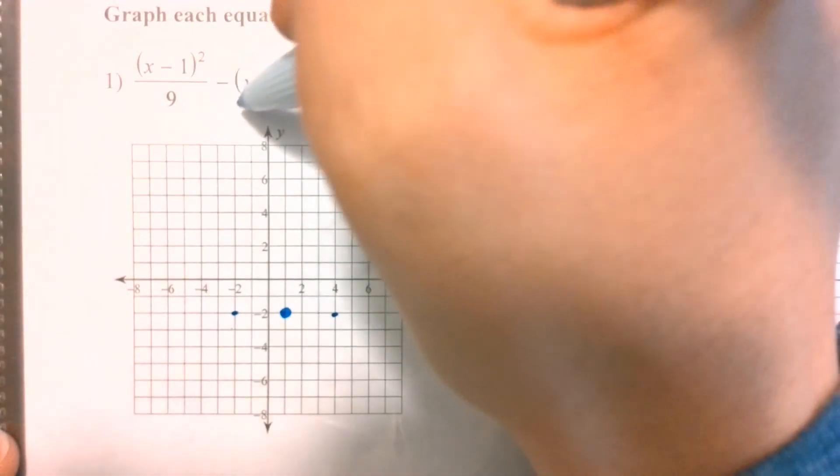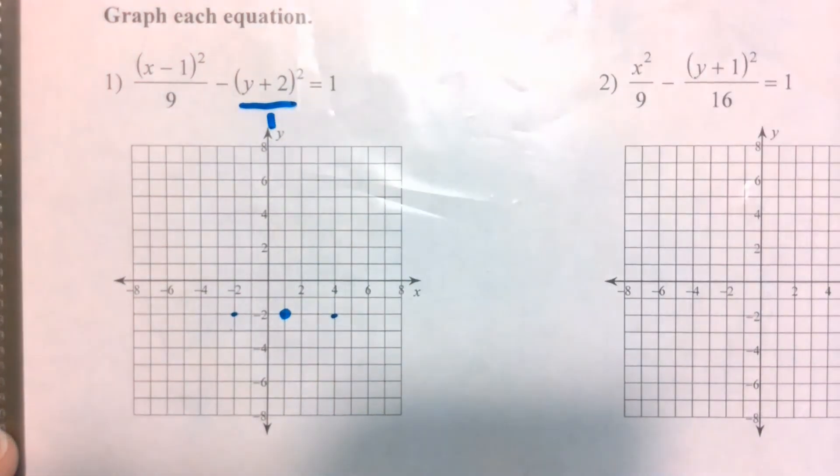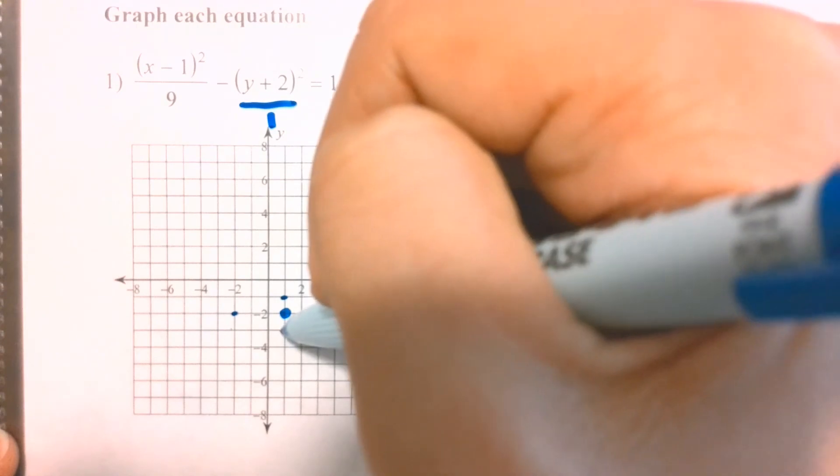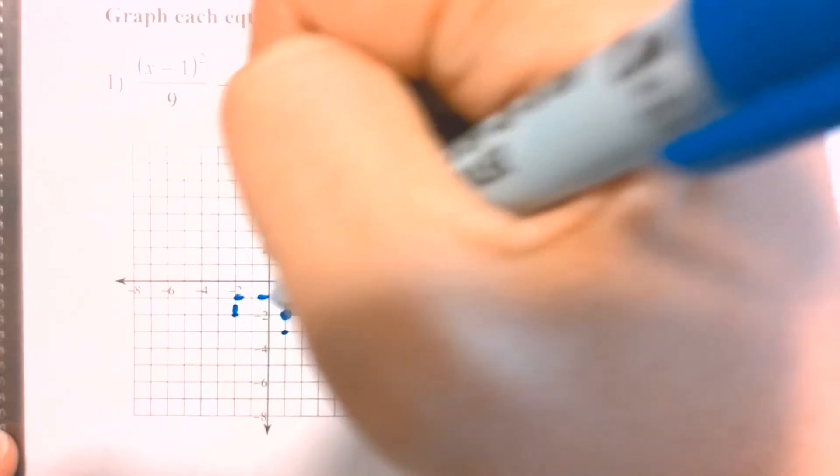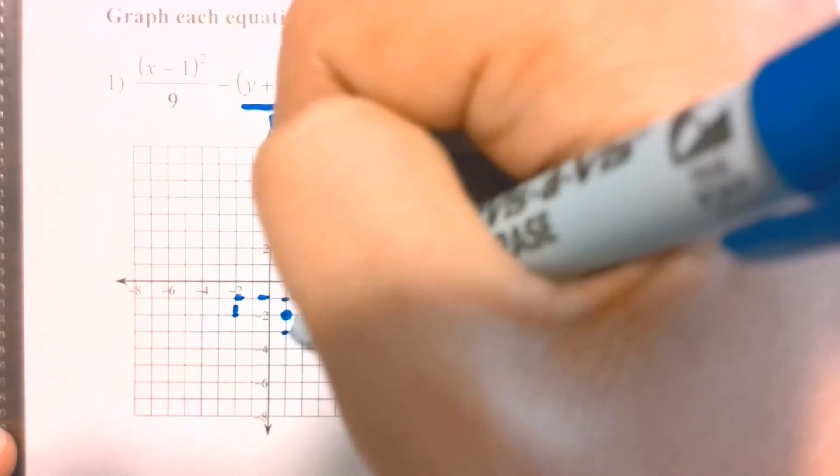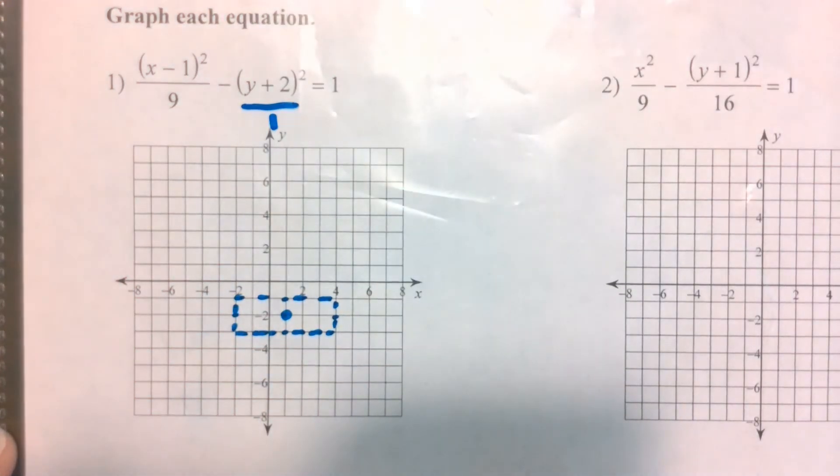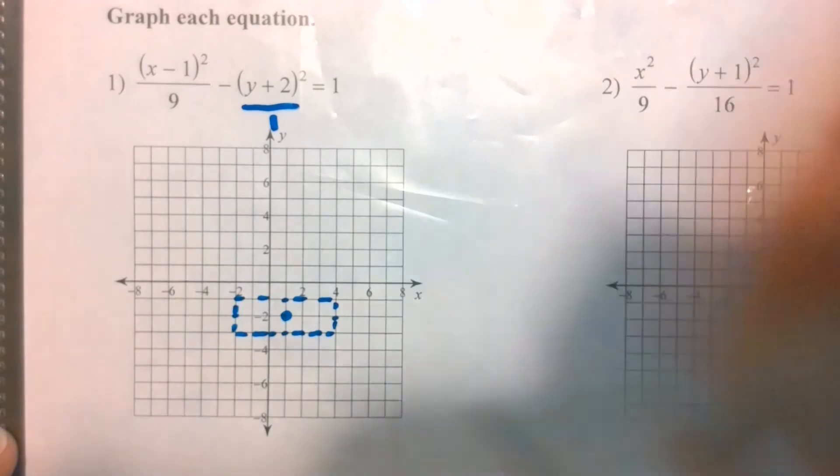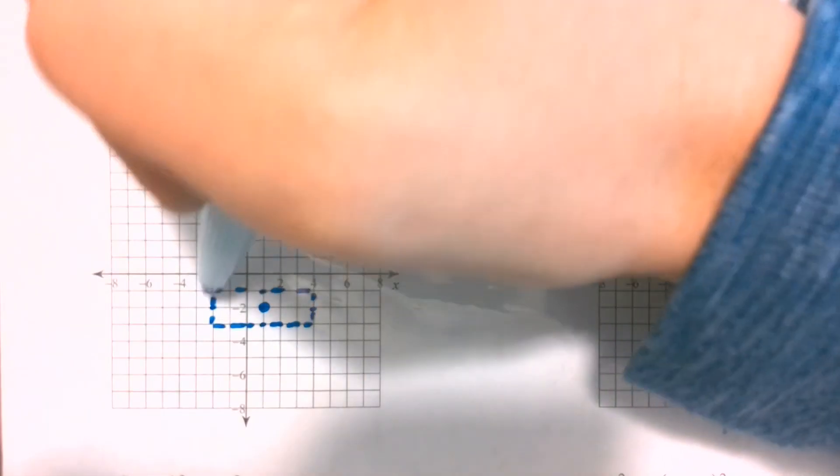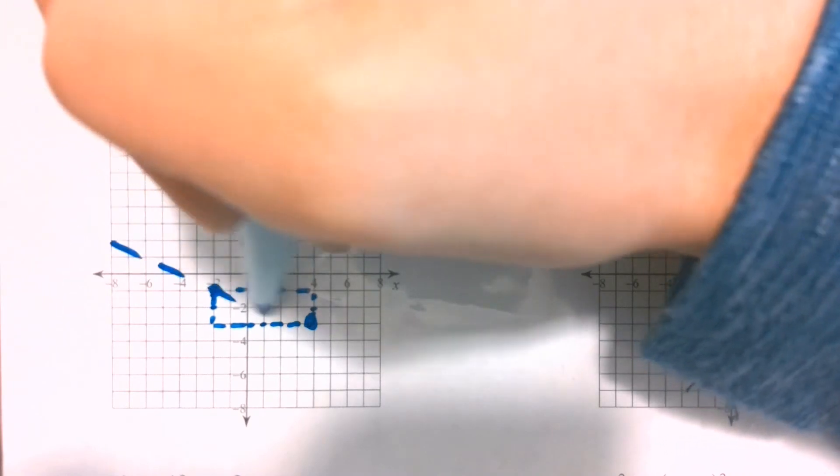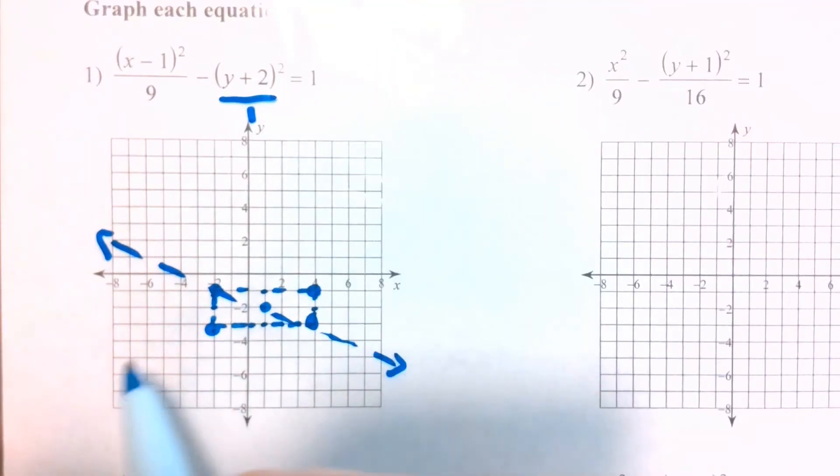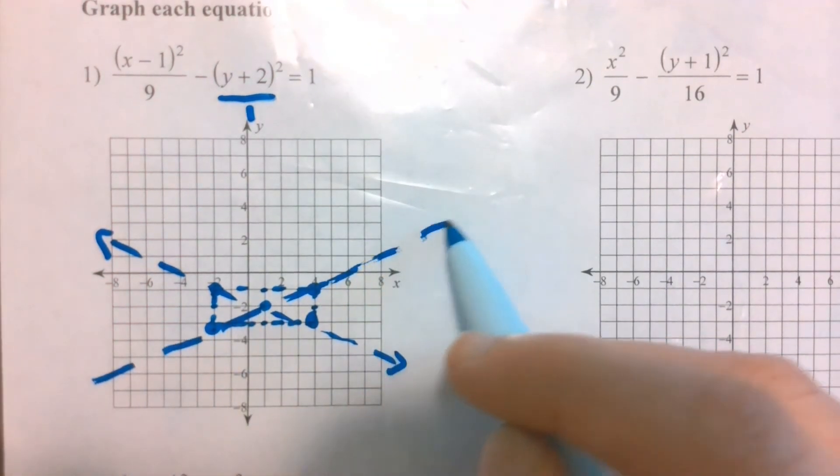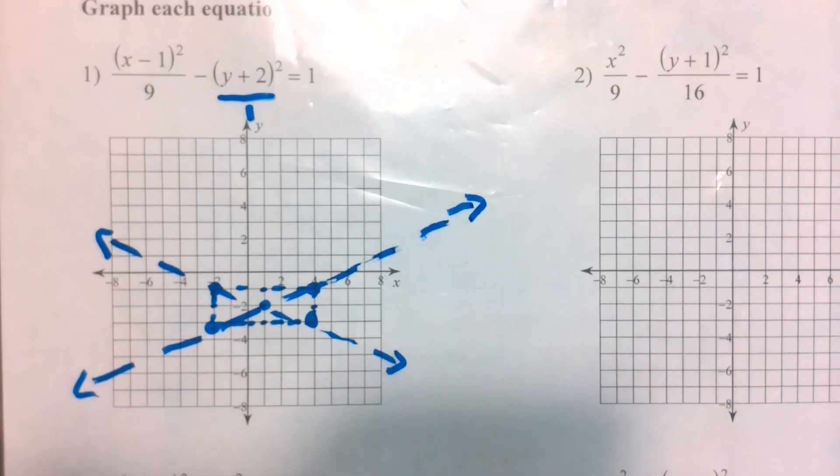There isn't anything underneath the y, so you could even think of this as being a 1 underneath the y. Taking the square root, that would tell us we're going to go up 1 and down 1. Remember that these points are just for us to be able to draw in that rectangle. I would definitely make it dashed because it's not part of the actual equation. We'll use the rectangle to draw in our asymptotes. Just like the ellipse and the circle, it's not going to be perfect, but you should be able to get pretty close to what this would look like if you graphed it on your calculator or something.